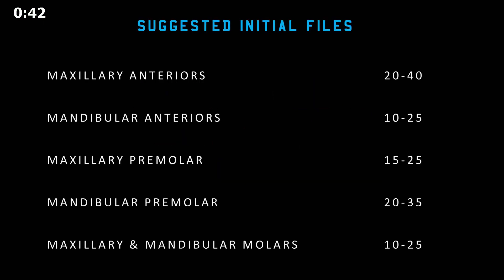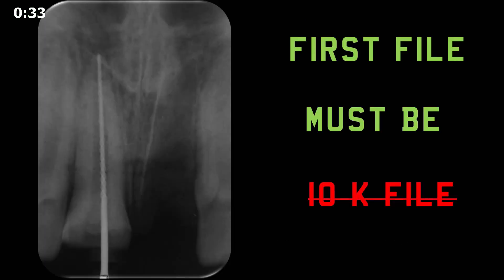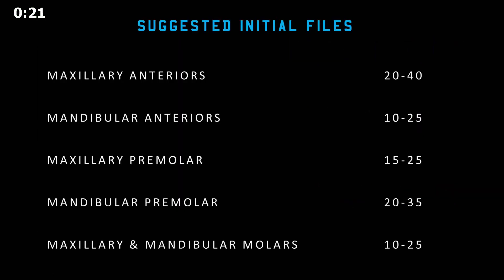The initial file is not a fixed file size — it varies between each tooth, each canal, and each individual. The misconception that a size 10 file should be the initial apical file will be wrong in most circumstances. Select the initial apical file individually for each tooth, and if this selection is wrong, your entire cleaning and shaping will be wrong, your obturation will be wrong, and ultimately the root canal treatment will end up as a failure.